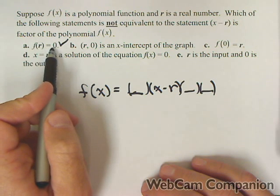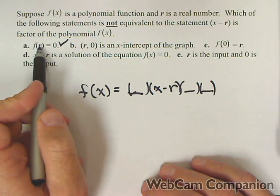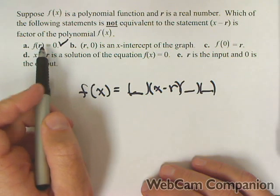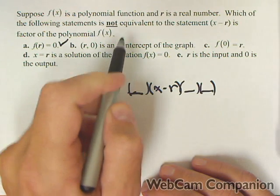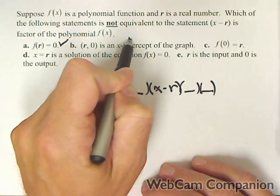Now if f of r equals zero, that means r is a zero of our polynomial, which is the same thing as saying it's an x-intercept. So that's okay.